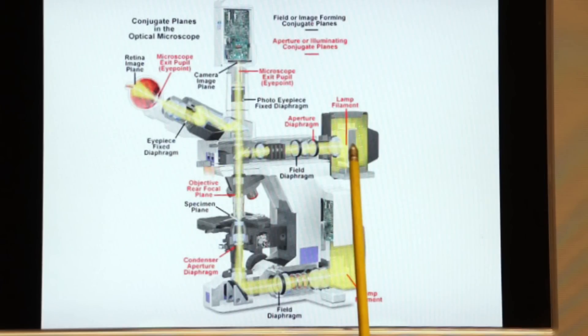Here we have the lamp housing which has that mercury bulb that we're going to discuss more in a few minutes. It produces a lot of light which travels through the vertical illuminator.